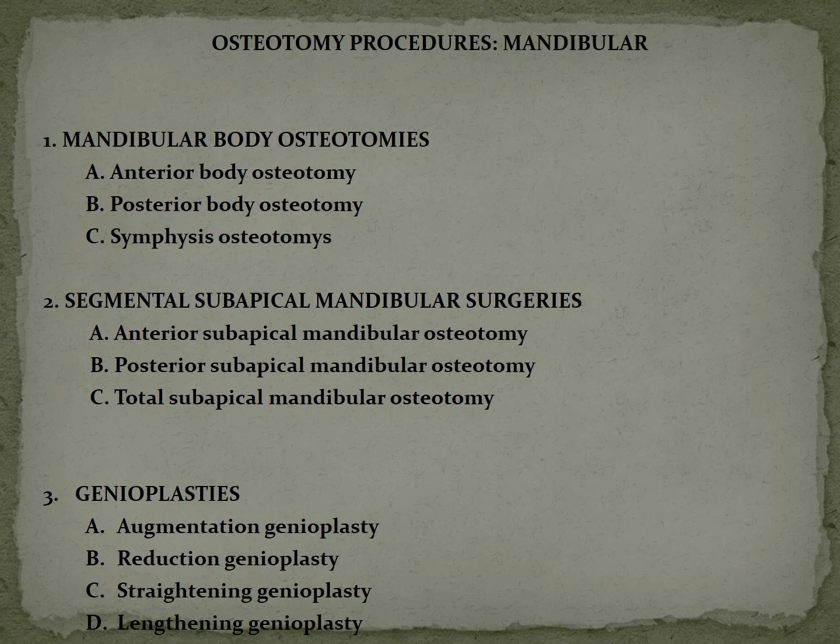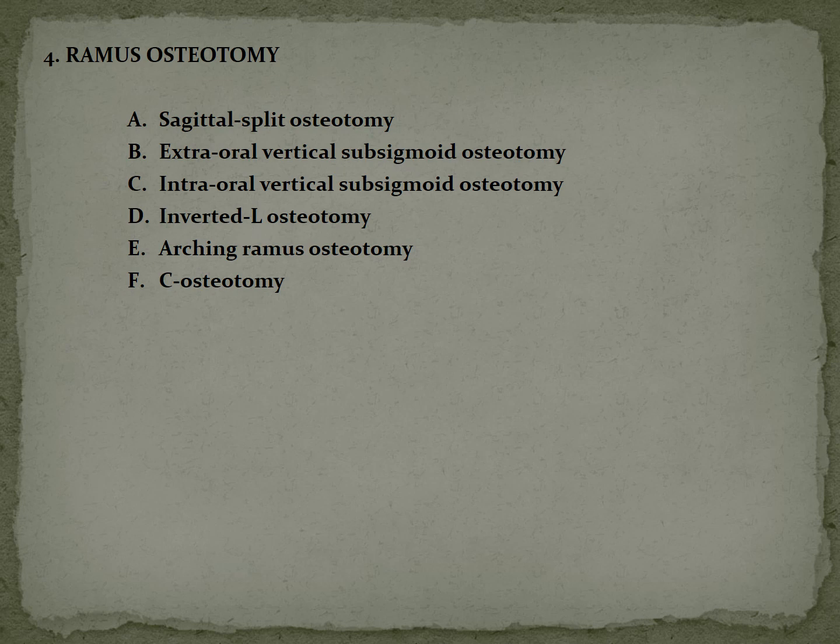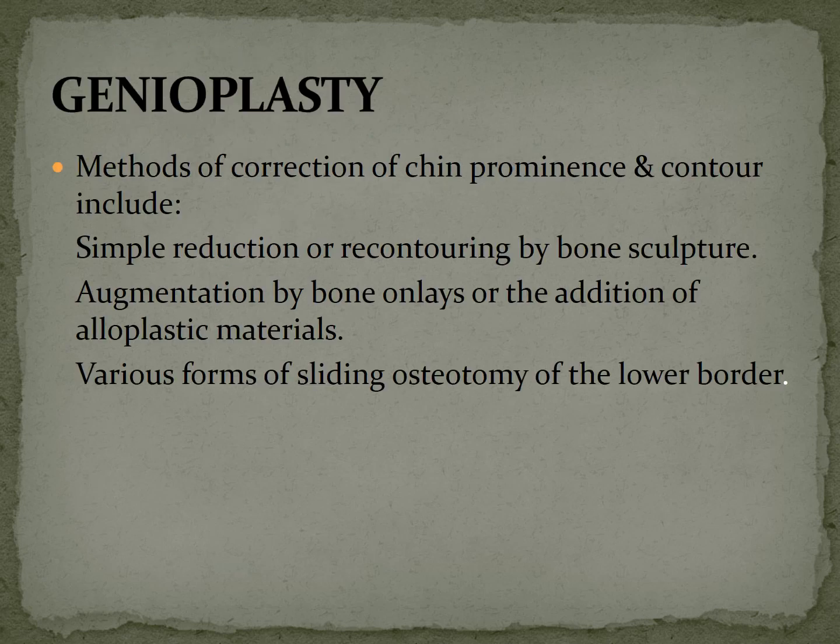Procedures performed in the ramus of the mandible include: the most commonly performed — bilateral sagittal split osteotomy (BSSO); extraoral vertical subsigmoid osteotomy; intraoral vertical subsigmoid osteotomy; inverted L osteotomy; arching ramus osteotomy; and C osteotomy. All these osteotomies are performed in the ramus of the mandible.